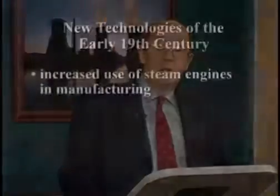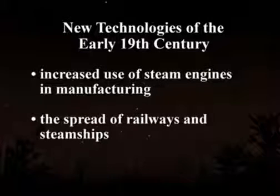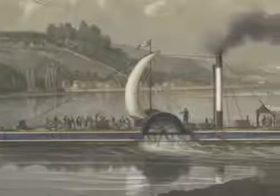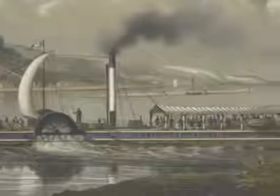Wave Two took place in the early 19th century. Innovation accelerated in many parts of Western Europe, including Belgium, France, and Germany, and also along the eastern seaboard of the newly independent United States. Technological changes in the second wave included the increased use of steam engines in manufacturing and the spread of railways and steamships. Railways spread rapidly in Europe and the USA. The first commercial steamship was a paddle ship designed by Robert Fulton, which traveled between New York and Albany beginning in 1807, using a Watt steam engine.